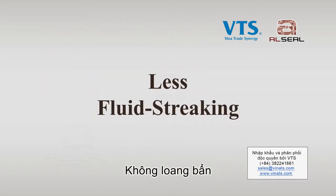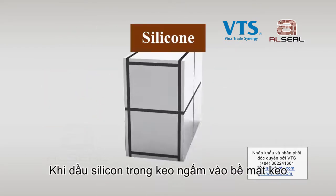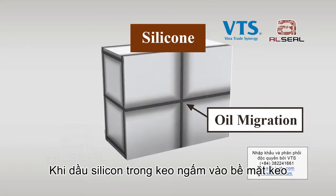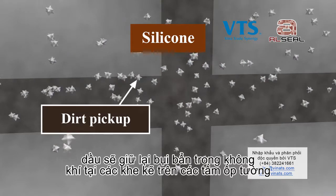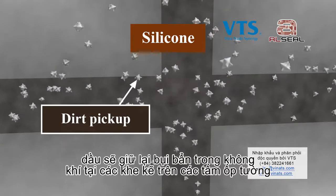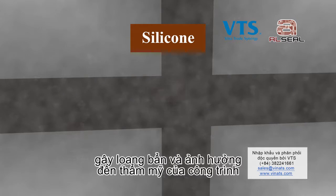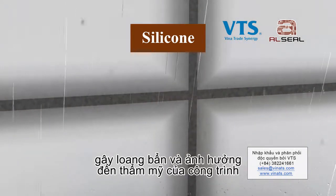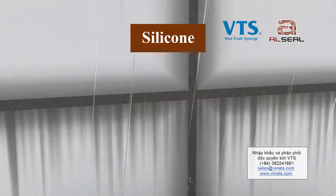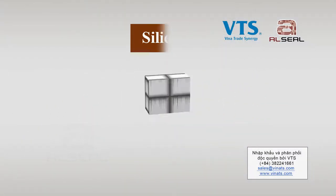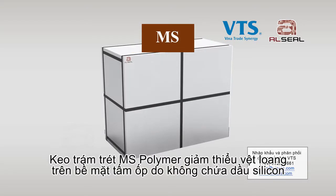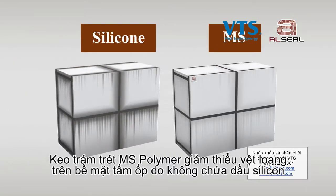Less Fluid Streaking. As silicone oil from silicone sealant migrates onto its surface, it retains more airborne dust particles in discrete water runoff channels on vertical or sloped building facades, resulting in fluid streaking aesthetic issues. There will be minimal fluid streaking on building facades sealed with MS Polymer Sealant because it simply does not contain silicone oil.